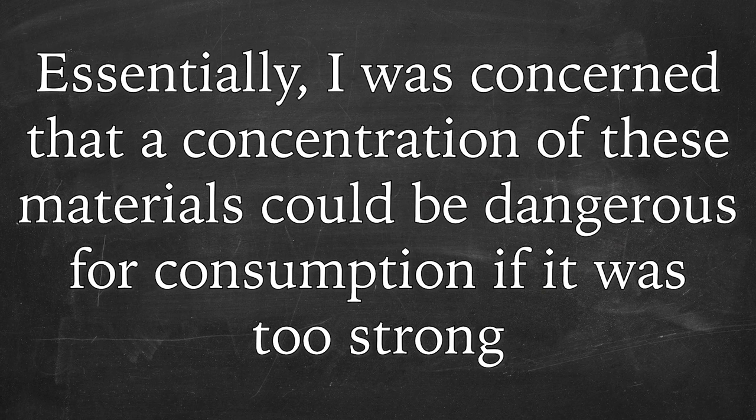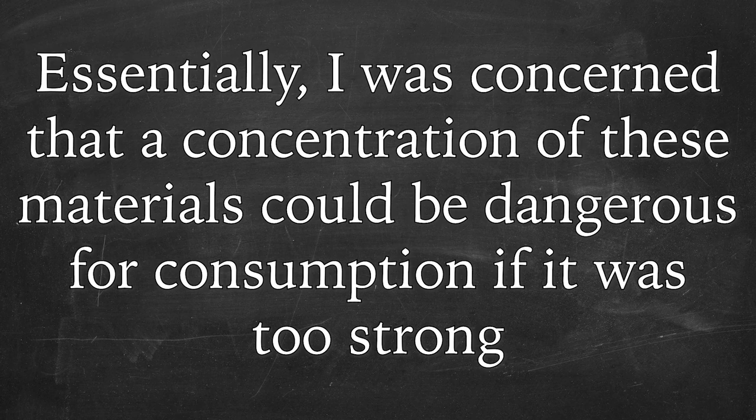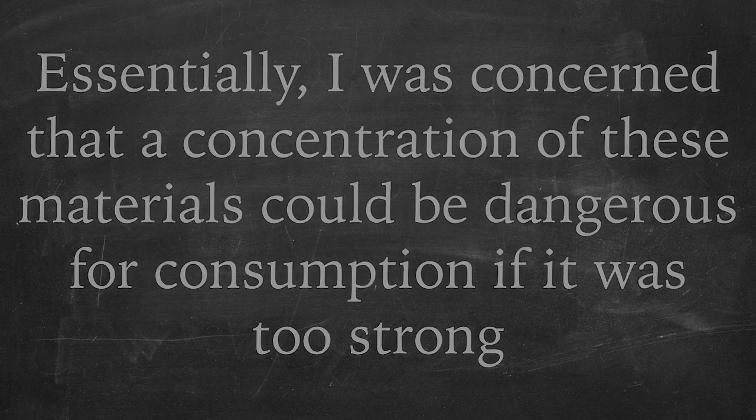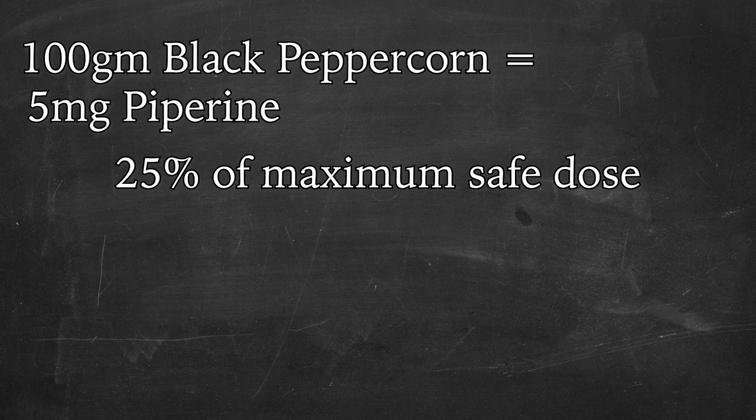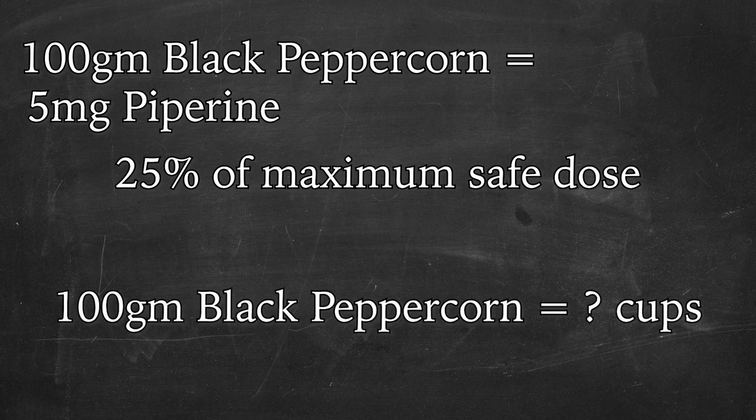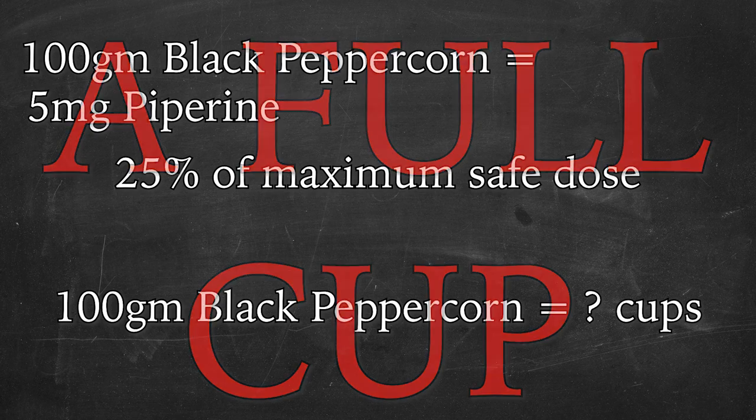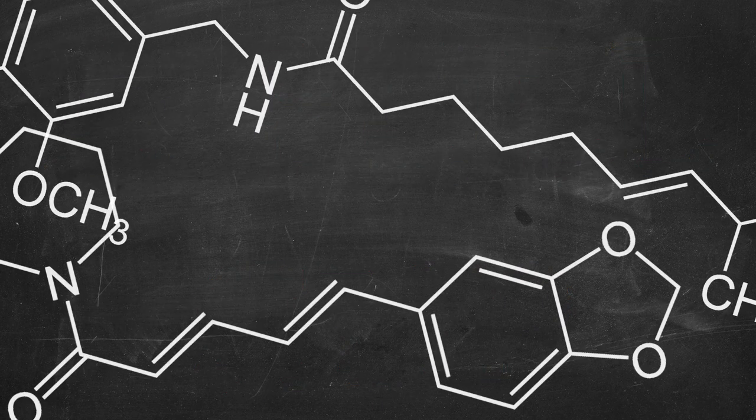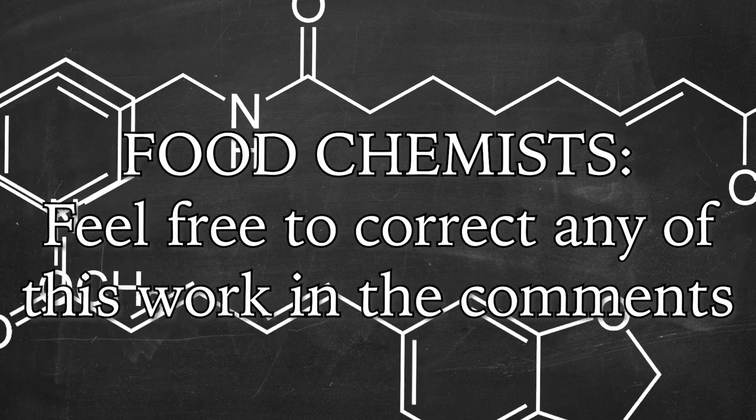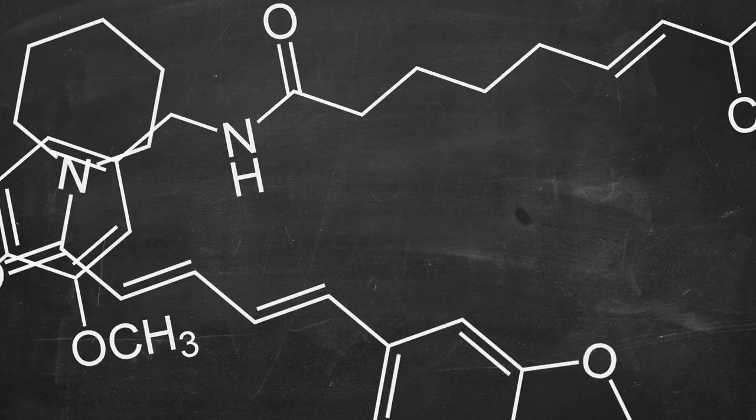The only reason I was concerned about this was because extracts made with alcohol will concentrate these materials into a very small amount of liquid, and that can be dangerous if done wrong. I was a fool to be so panicked. 100 grams of black peppercorns contains 5 milligrams of piperine, about 25% of the maximum safe dose. How much is 100 grams of peppercorns, you may ask? A full cup, way more than we would ever need for a solution with this little base. The same thing goes for capsaicin. There's simply too little in the amount of red pepper we're using to make this extract to be of any concern to us.